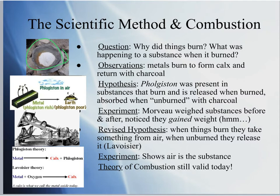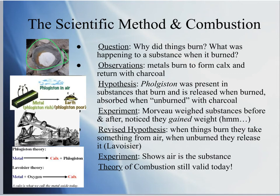A scientist named Morveau did many experiments. He theorized: if phlogiston is released when something burns, then the substances should be losing weight. So Morveau burned different substances, weighing them before and after, many many times over many years. He noticed that all the substances always gained weight after they burned instead of losing weight. That did not support the phlogiston hypothesis. If phlogiston were released when things burned, substances should get lighter — but Morveau noticed they got heavier.